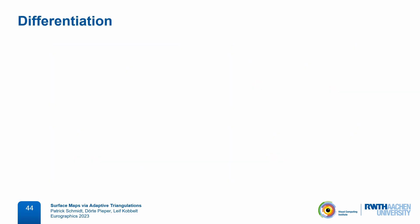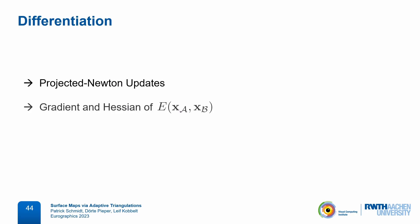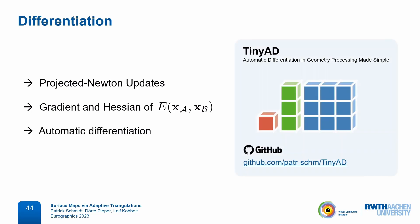Because we perform Newton-style optimization of vertex positions, we need the first and second order derivatives of this objective function, and we compute these via automatic differentiation using TinyAD. This is a small C++ library that we presented last year and it is really the tool that makes such algorithms possible and relatively pain-free to implement, because manually differentiating the full objective would be a huge task.